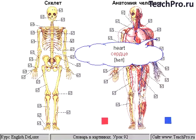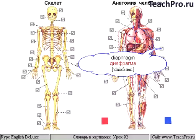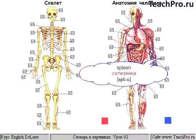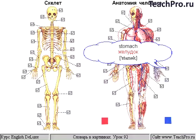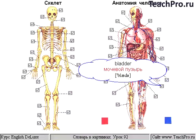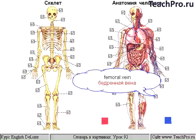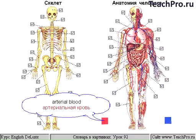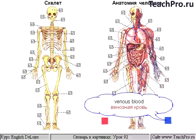Heart, diaphragm, spleen, stomach, large intestine, bladder, femoral vein, anterior blood, venous blood, heart.